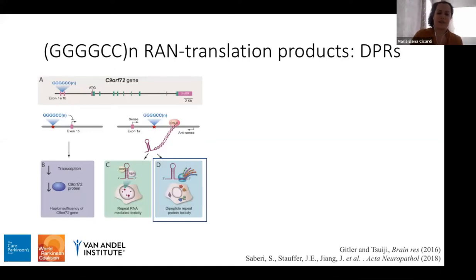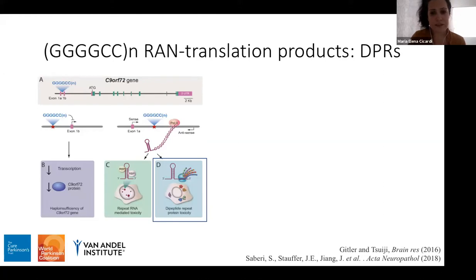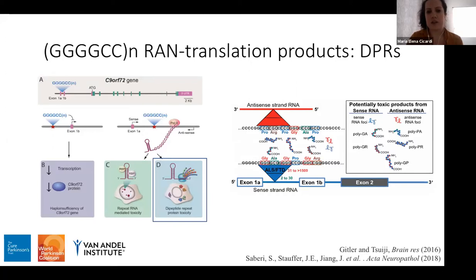The other two are gain-of-function mechanisms. The first is formation of RNA foci inside the nucleus, recruiting nuclear proteins, also identified in dendrites of neuronal cells. The third mechanism, which I'm most interested in, is aberrant RAN translation — repeat-associated non-ATG translation. This translation can read the G4C2 repeat without an ATG start codon, reading both sense and antisense in three frames, producing DPRs: dipeptide repeat proteins GA, GP, and GR in sense, and PR, PA, and PG in antisense.